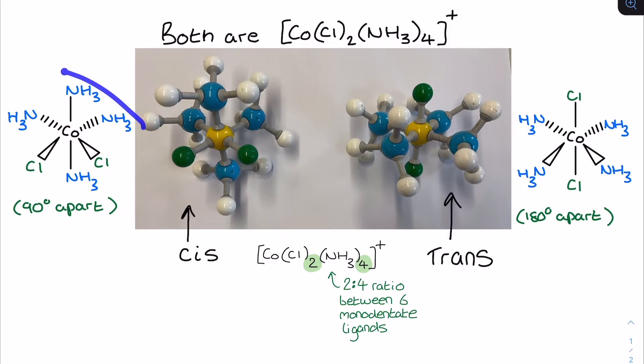I've also replicated the structures just to the side of the image of the molymods, so you can see how you would be expected to draw this in an examination. In this diagram on the left, you can see the one that I've labelled as cis. I've got the two Cls shown around the middle of that octahedral shape. Now it's not important that they're around the middle. What's important is that they are 90 degrees apart.